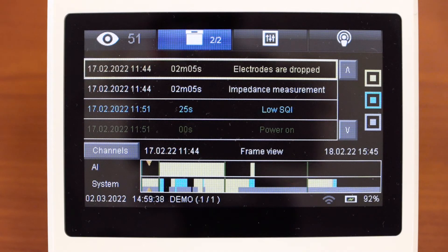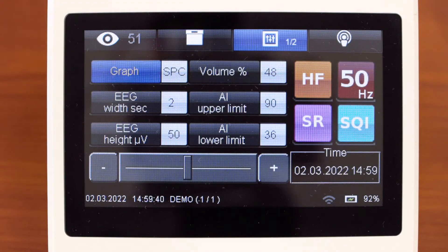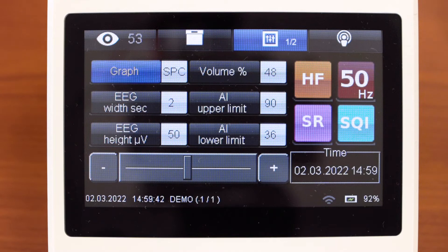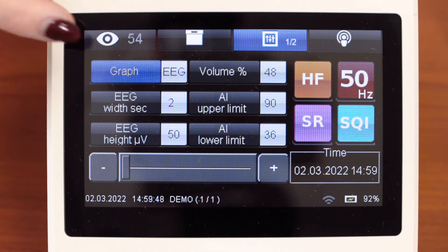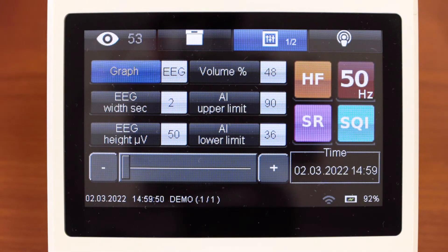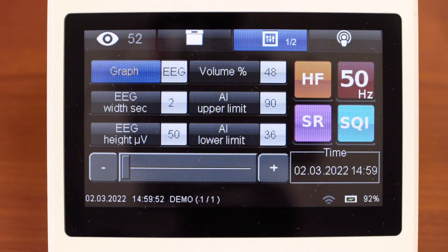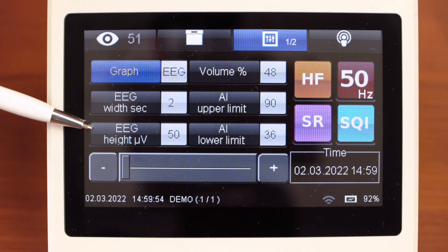The next window is settings. Here you can change the type of graph between spectrum view and EEG native view. You can change EEG width and height.